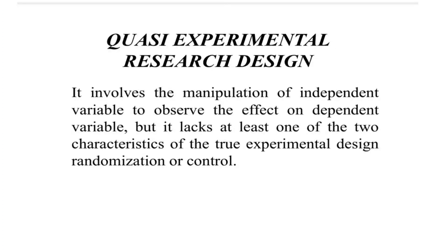In Quasi Experimental Research Design, out of these three criteria, any one will be missing — either Randomization will be missing or Control Group will be missing. It involves the Manipulation of the Independent Variable to observe the effect on the Dependent Variable. So Intervention or Manipulation is compulsorily present. What it lacks is either Control Group or Randomization — randomized selection of subjects will be absent, or there will be only one group and no Control Group.